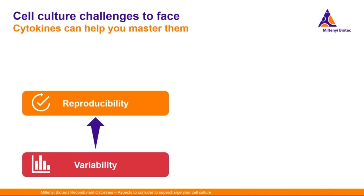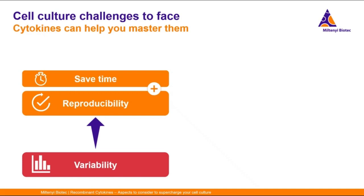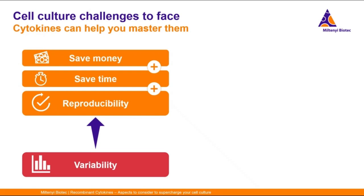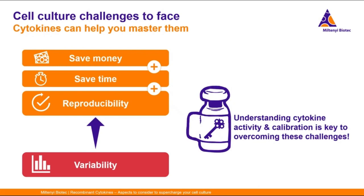It would be best if we could go from variability to reproducibility, because this could help us save time and save money because we don't have to repeat experiments and spend more resources on them. And why am I telling you all of this? The reason is that recombinant cytokines play a part in all of these aspects, and understanding cytokine activity and calibration and putting these things into practice is key to tackle these challenges. Today we are going to explore how and why.